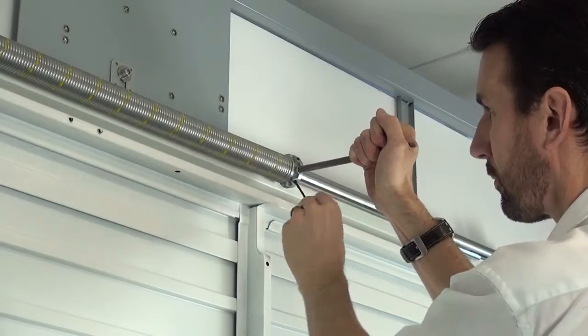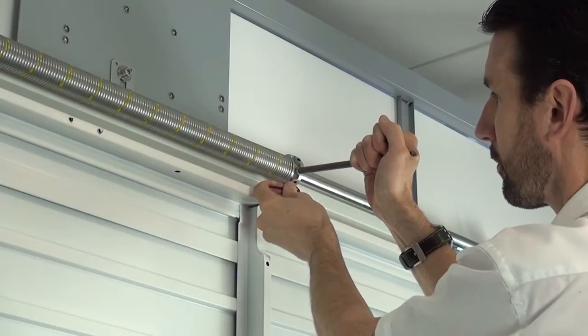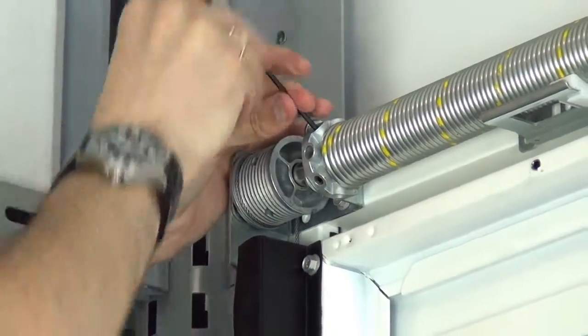After tension is applied, re-tighten the grub screws on the right hand side of the spring. Undo the grub screws on the left hand side of the spring.